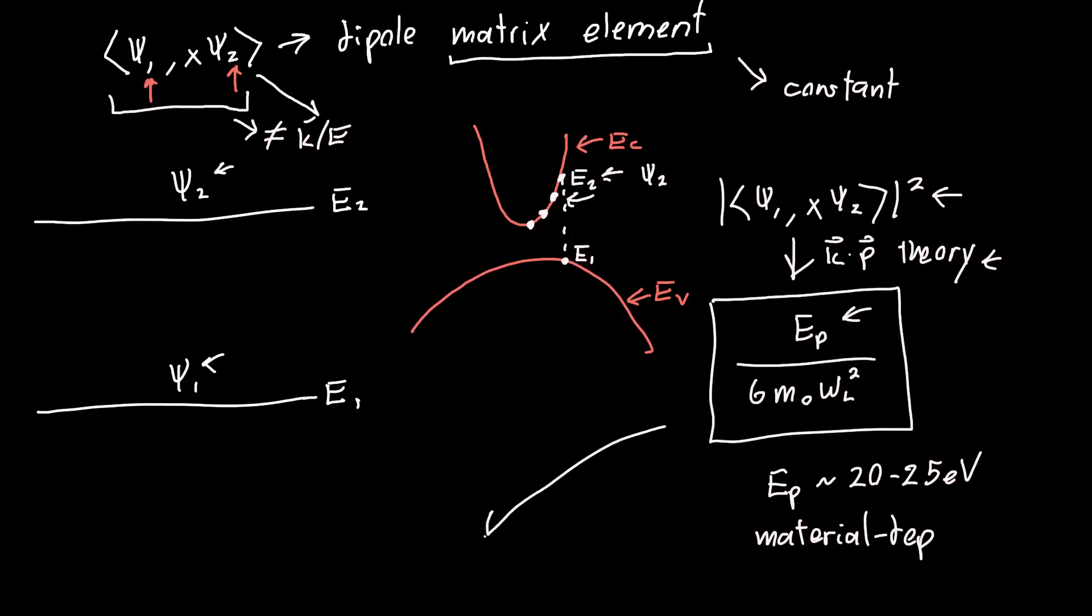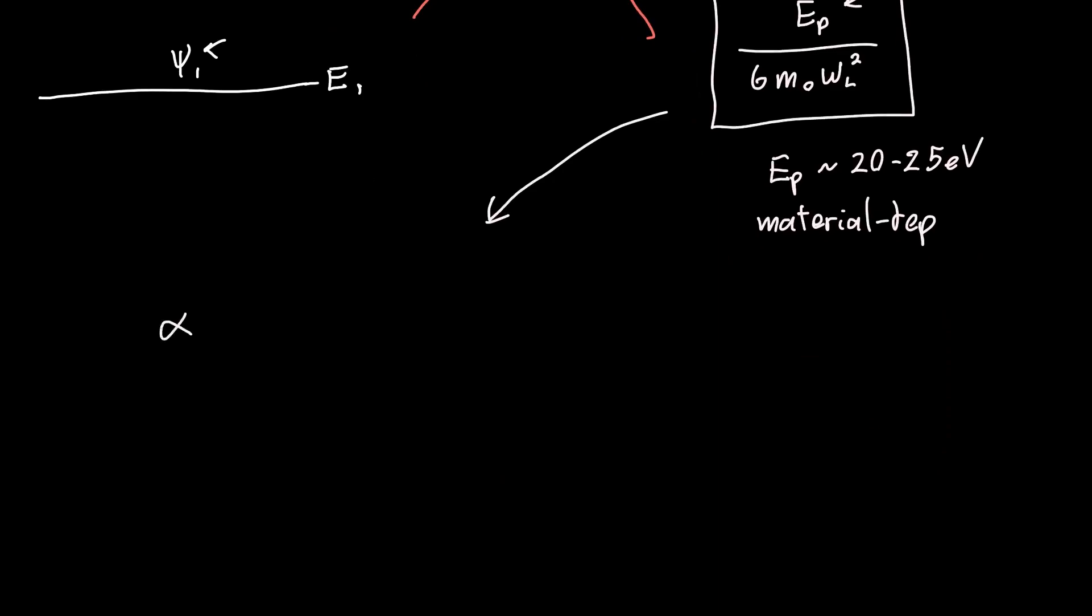So now we're finally ready to actually get some numbers for our absorption spectra. If we plug this value in for the magnitude of the matrix element squared, we can write out a new form of our absorption coefficient alpha. After doing a bunch of algebra, you can get that it's equal to pi times q squared times eta naught, the impedance of free space, times h bar - this is getting to be quite a mess - times E_p divided by 6 times the material refractive index times the electron free mass. This all has units of area times energy squared.